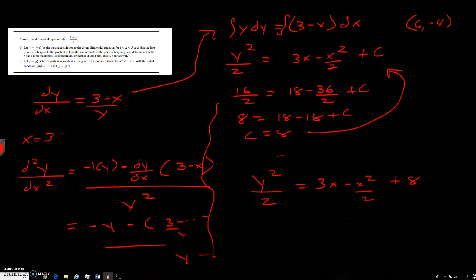So now we want to basically get this by itself. So how do we get y by itself? We're going to double everything. So we're going to get y squared equals 6x minus x squared plus 16.